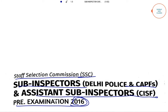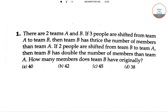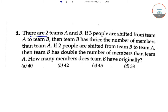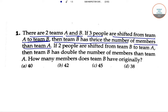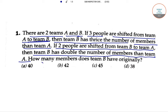So let's get started. Here the question we have: there are two teams, Team A and Team B. If three people are shifted from Team A to Team B, then Team B has thrice the number of members than Team A. If two people are shifted from Team B to Team A, then Team B has double the number of members than Team A. How many members does Team B have originally?